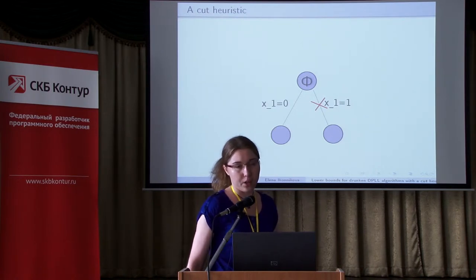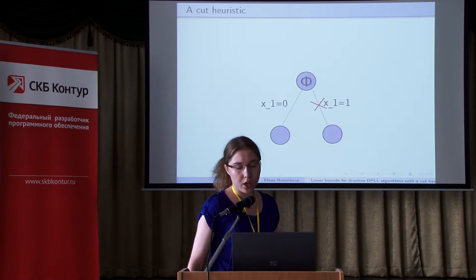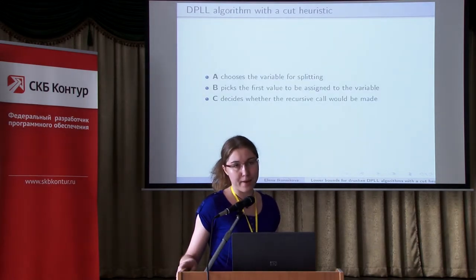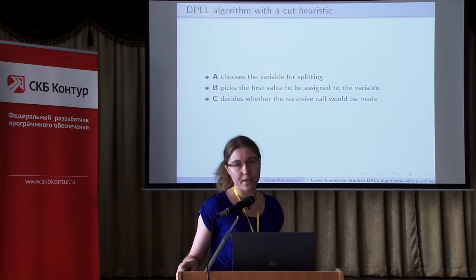We want to speed up our algorithms somehow. One way to do it is to introduce a so-called CUT heuristic. It decides that we will not investigate some branch of the tree, and the algorithm outputs that the current formula is unsatisfiable. Of course, that may cause errors, but if an algorithm errors rarely and works fast, that would be very nice and may be used in some applications.